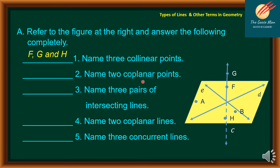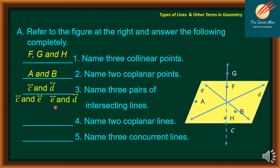Name two coplanar points: we can pick point A and point B. Number three, name three pairs of intersecting lines: we can have line C and line D, line C and line E, and line E and line D. Number four, name two coplanar lines: line E and line D because they are lying on the same plane. Number five, name three concurrent lines: line C, line E, and line D are three concurrent lines.